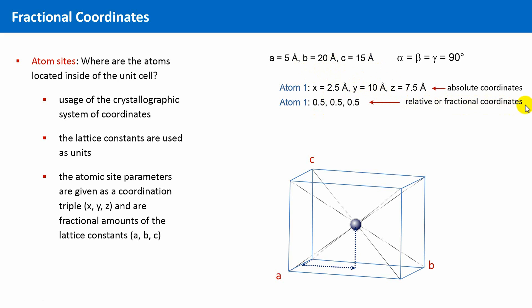The advantage of using fractional coordinates instead of absolute ones is that special positions are immediately recognized, as in this case here. If you see the fractional coordinate 0.5, 0.5, 0.5, you immediately know that this atom sits at the center of the cell.